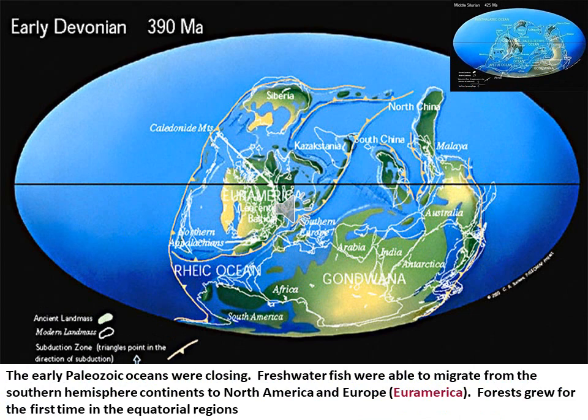In the Devonian era, 390 million years ago — called the Golden Age of Fishes — the large Gondwana continent started to drift towards the northern part. Australia moved towards the equator. India and Antarctica were still closely related, while Africa and India were neighbors. South America was very close to Africa, and Siberia had already moved towards the northern side. Forests grew for the first time in the equatorial region — in areas like Australia, Lemuria, South China, and Kazakhstan.